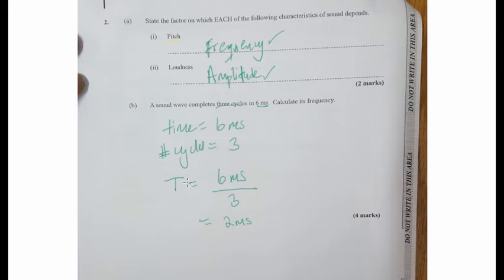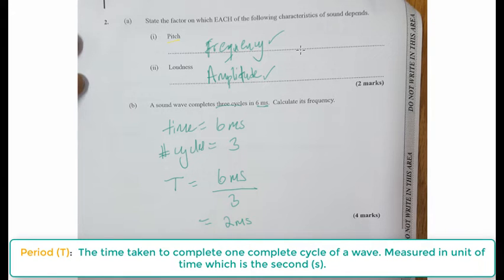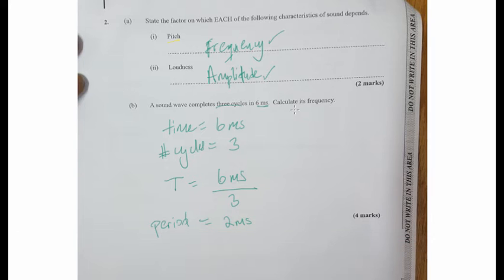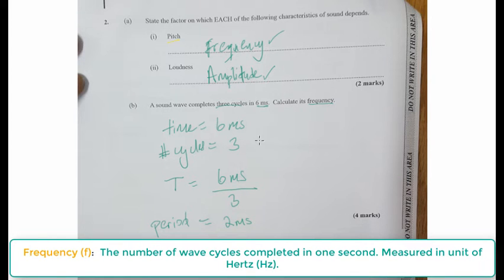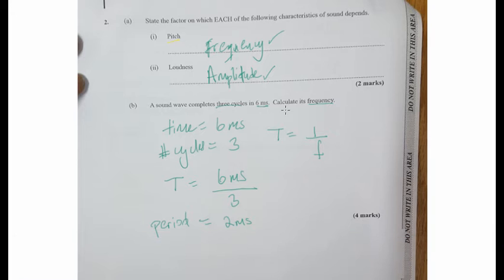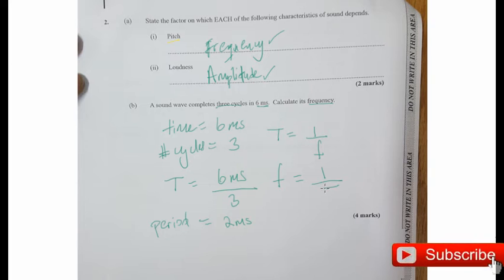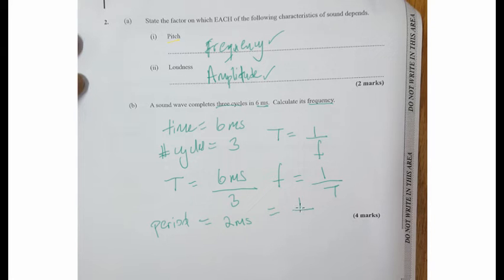The time to complete one oscillation is the period, so the period T is two milliseconds. We're interested in finding the frequency, and frequency and period are related such that the period is the inverse of the frequency: T = 1/f. Transposing this formula gives us f = 1/T. Plugging in our values: frequency equals one divided by two milliseconds.